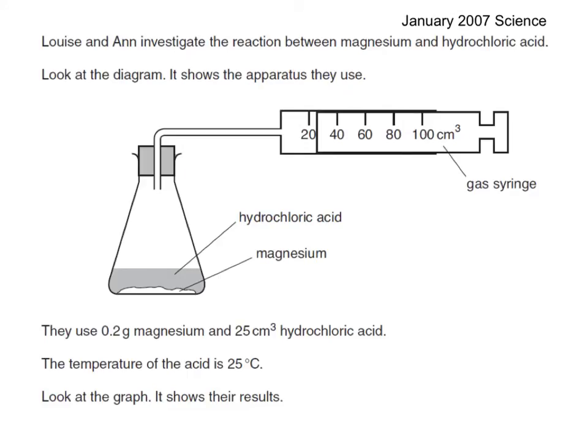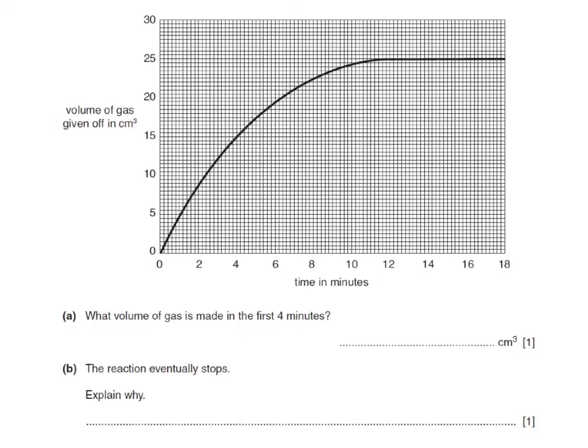Here's a past paper question. Louise and Anne investigate the reaction between magnesium and hydrochloric acid. Look at the diagram. It shows the apparatus they use. Here they're using another solid, this time magnesium, in hydrochloric acid. This would react to produce hydrogen gas, and the hydrogen gas would travel through the apparatus and collect in the gas syringe. They're using 0.2 grams of magnesium and 25 cubic centimeters of hydrochloric acid at 25 degrees Celsius. Look at the graph. It shows their results. The first question says, what volume of gas is made in the first four minutes? For this type of question, you'd use a ruler and read up from the four-minute mark up to the curve and read across to the other scale. This would read 15 cubic centimeters.